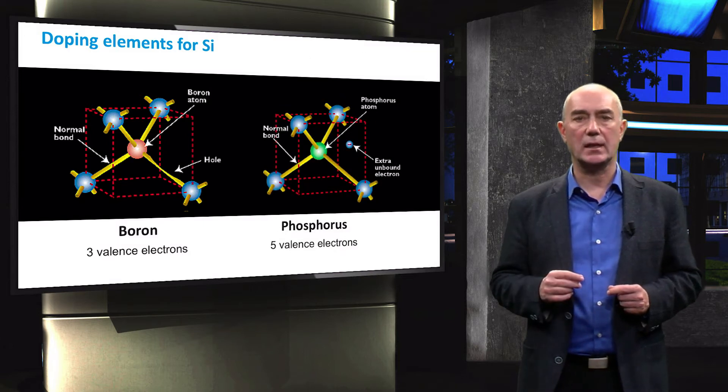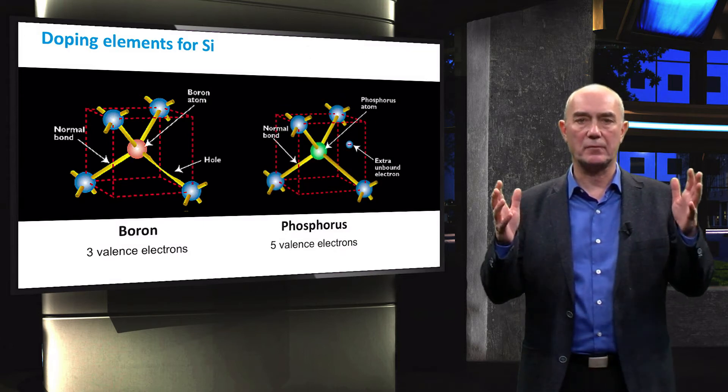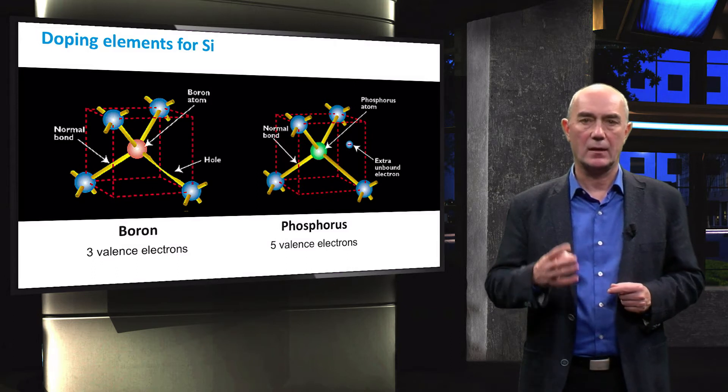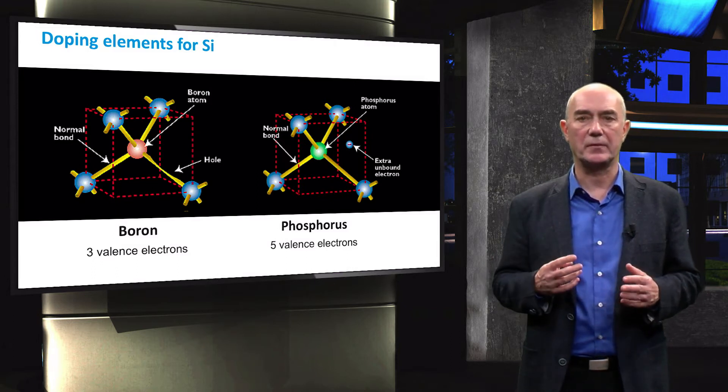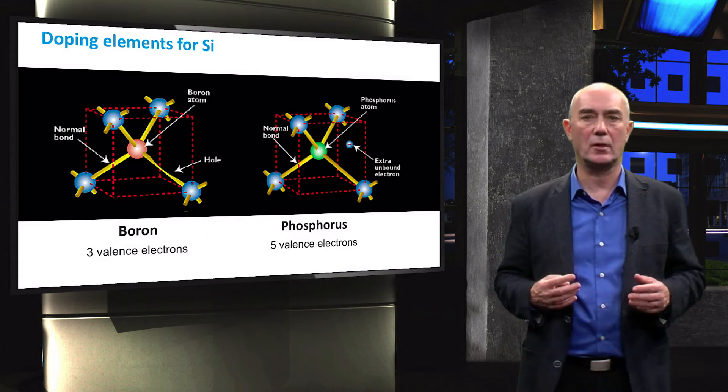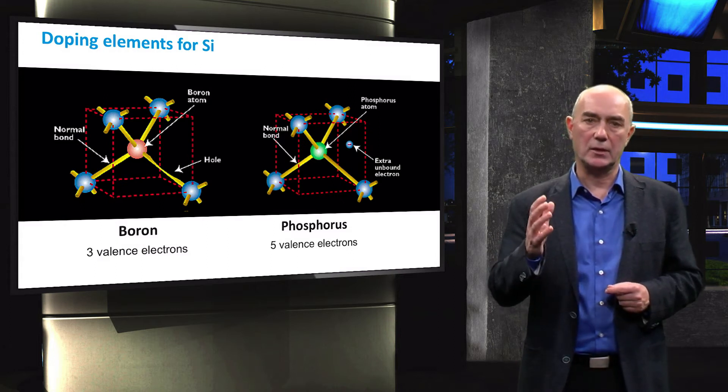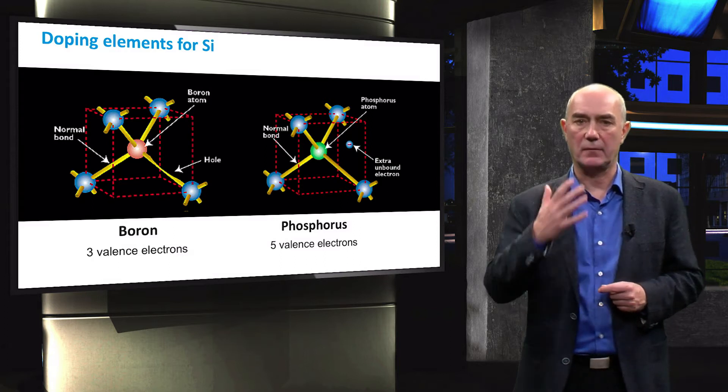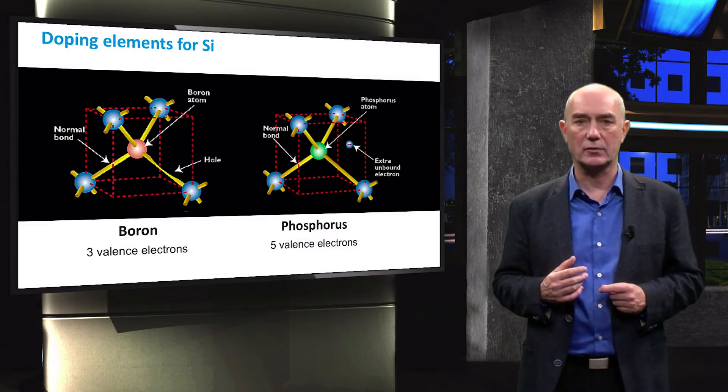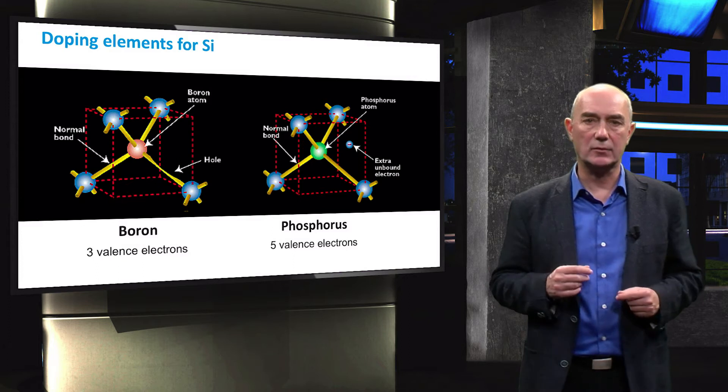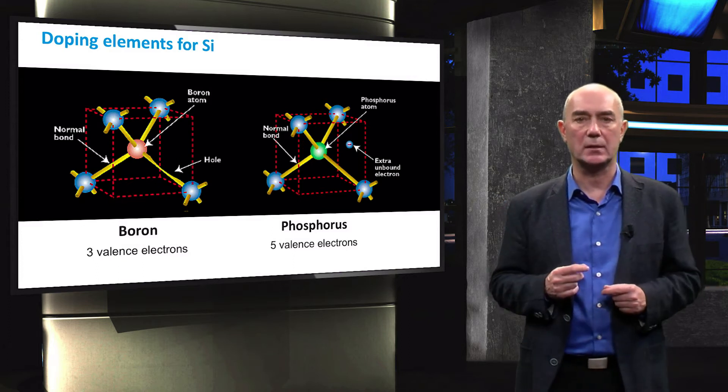On the right side of this slide you can see the situation with a phosphorous atom. Four valence electrons of the phosphorous atom form four covalent bonds with neighboring silicon atoms. Because phosphorous atom has five valence electrons, there is an extra electron floating around and not being involved in a bond.